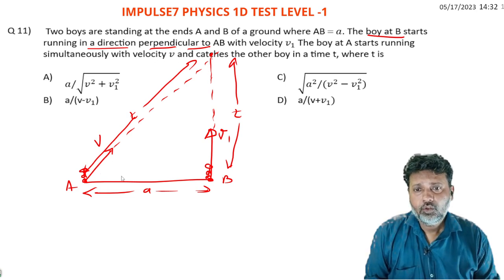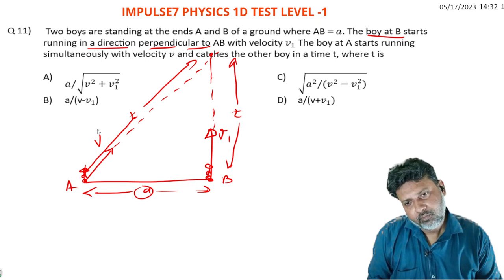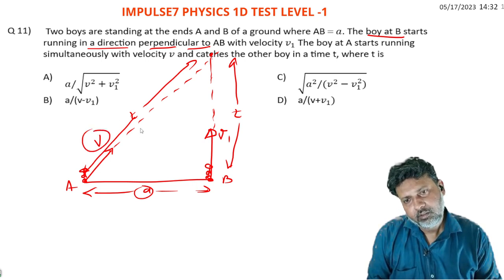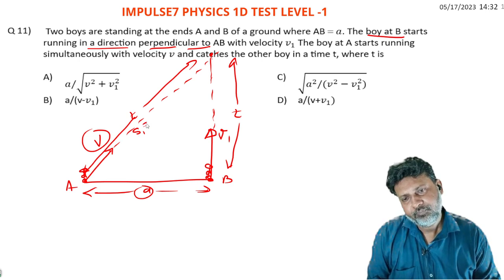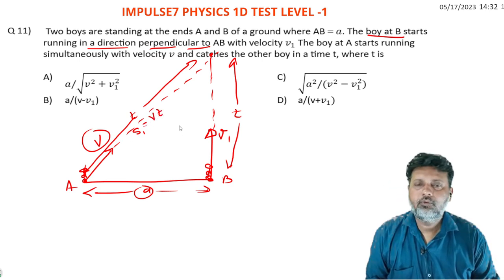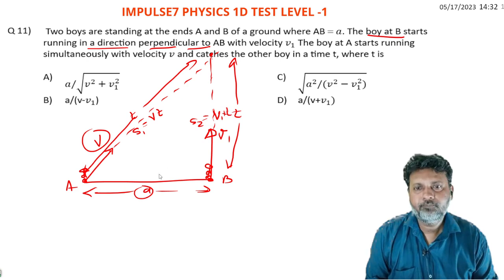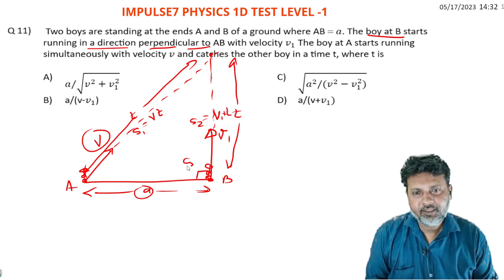The distance traveled by A we can call s1, and the distance traveled by B we call s2. Using the velocity formula, distance equals velocity times time. So s1 equals v times t, and s2 equals v1 times t.